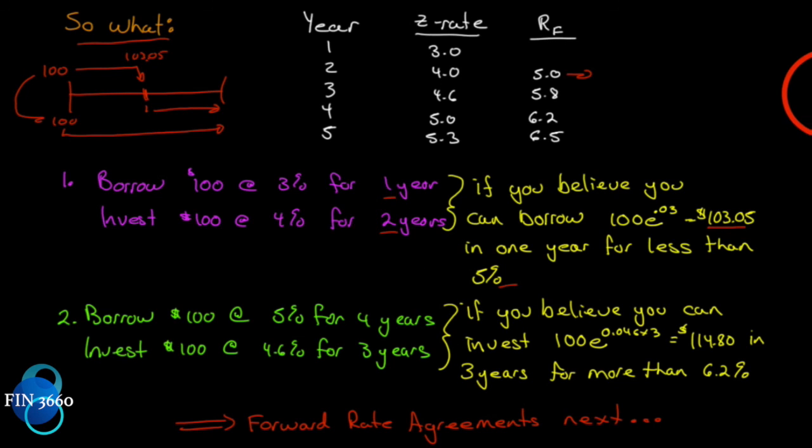That implies a belief. If you believe you can borrow one hundred and three oh five in one year because we know that's what our loan will grow to. We can borrow one hundred and three oh five for less than five percent. There we go. We can also go the other way around. We can borrow and let's make our timeline here. We can borrow one hundred dollars at five percent for four years. So we're going to borrow one hundred for four years. So we're going to have to pay back some amount of money in four years. And we're going to have to pay back one hundred E to the RT. R being five percent. T being four. Well we can invest that down here for three years. So here's our four year rate. Here's three. And we'll invest at four point six percent. Now right off the top you would say that doesn't seem right. You're going to borrow at five and invest at four point six.